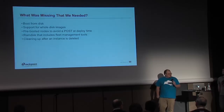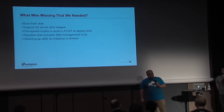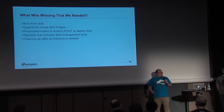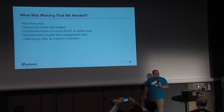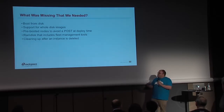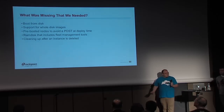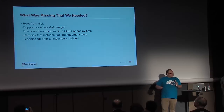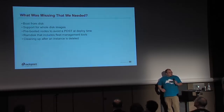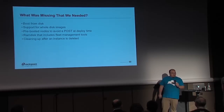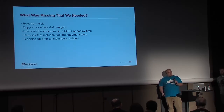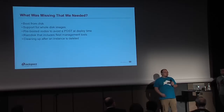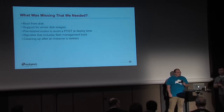This is a continuation of the story told yesterday about wanting to build OnMetal and looking at Ironic. We originally did our own thing — we called it Teeth Overlord and Teeth Agent. We pretty quickly realized, with urging from senior Nova people at Rackspace, that maybe wasn't the right path. So instead we went to Ironic, but we saw there was a lot of stuff missing that we really needed.